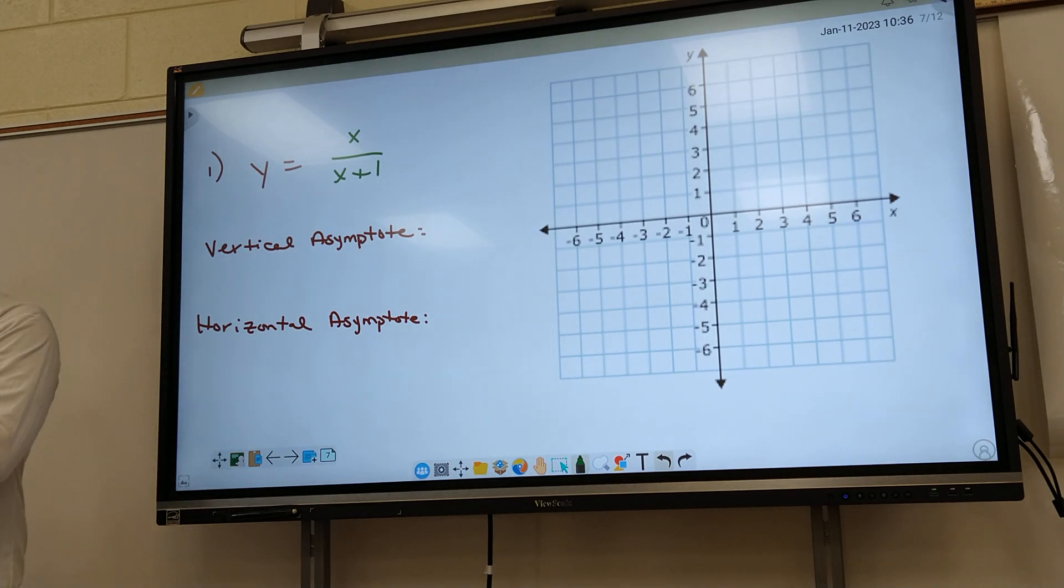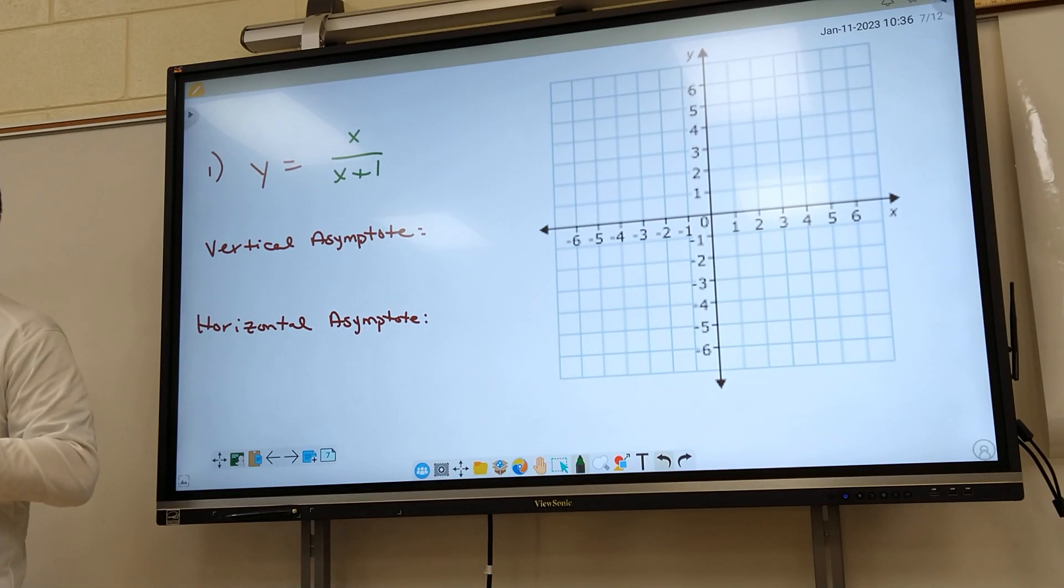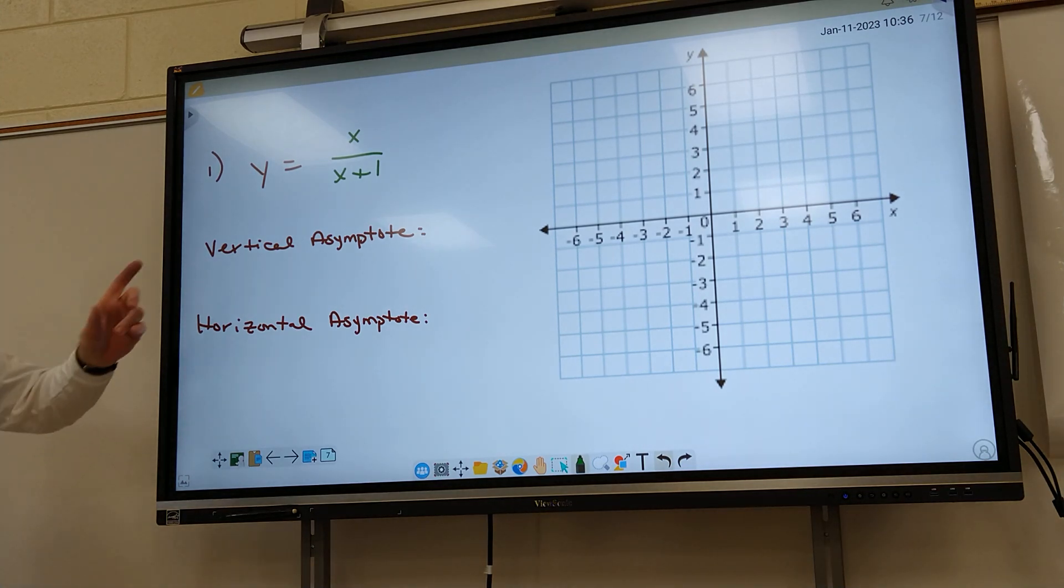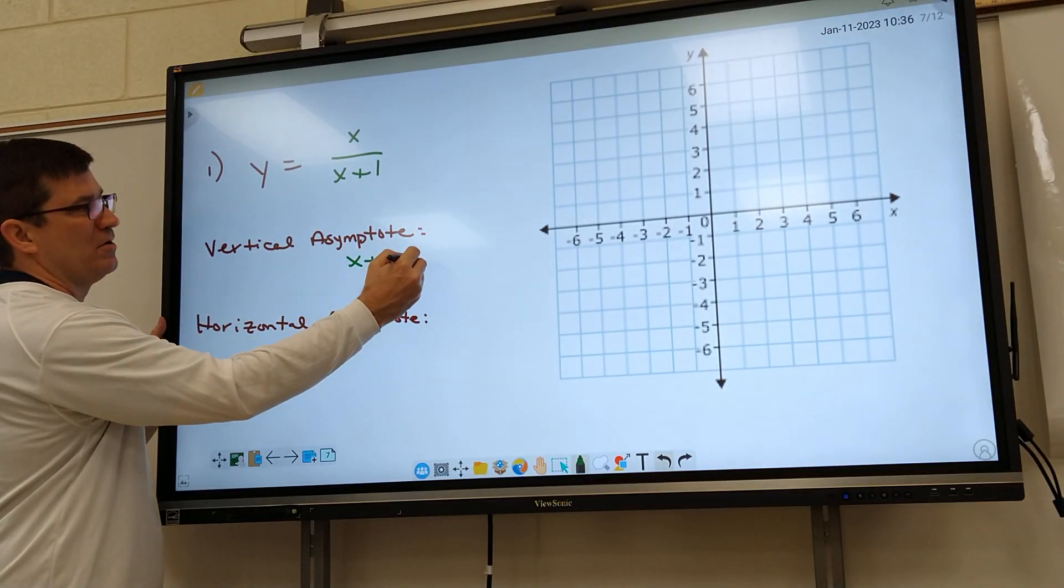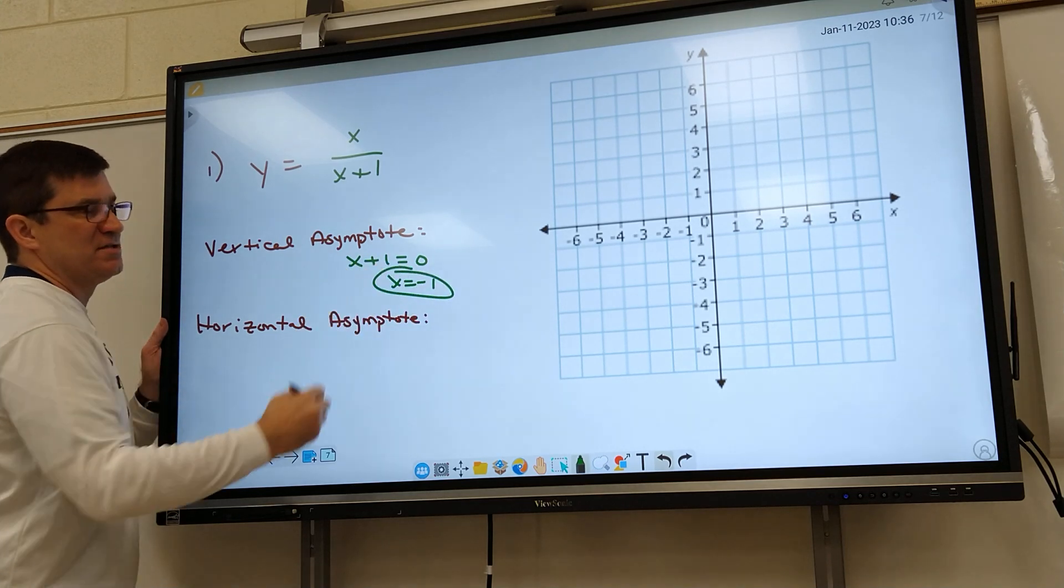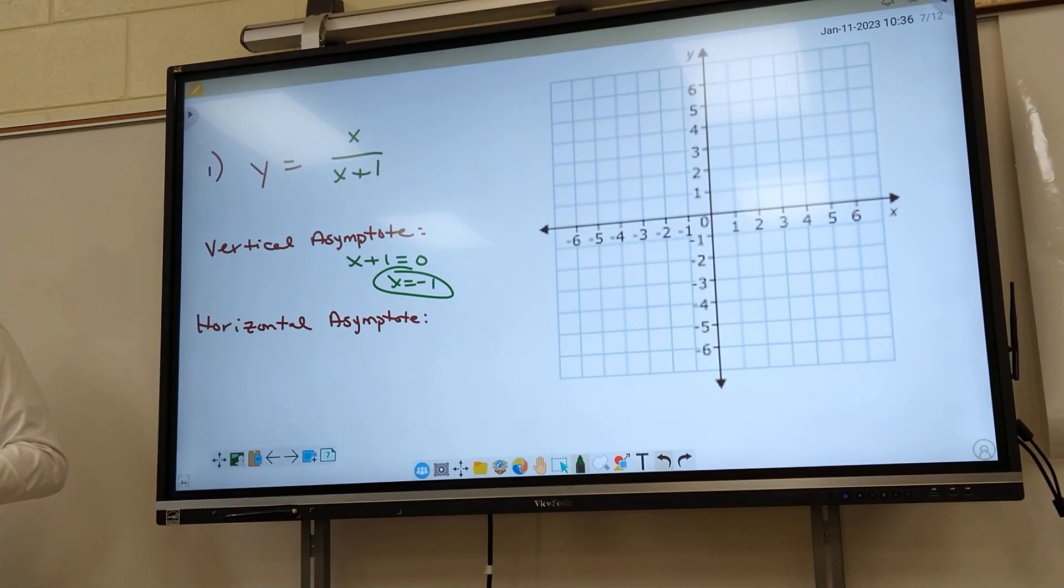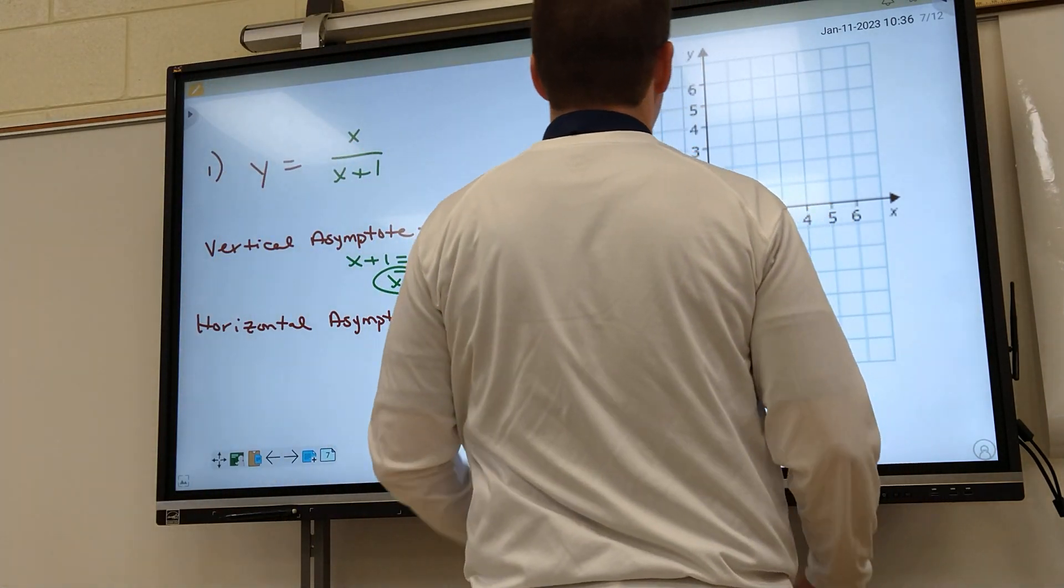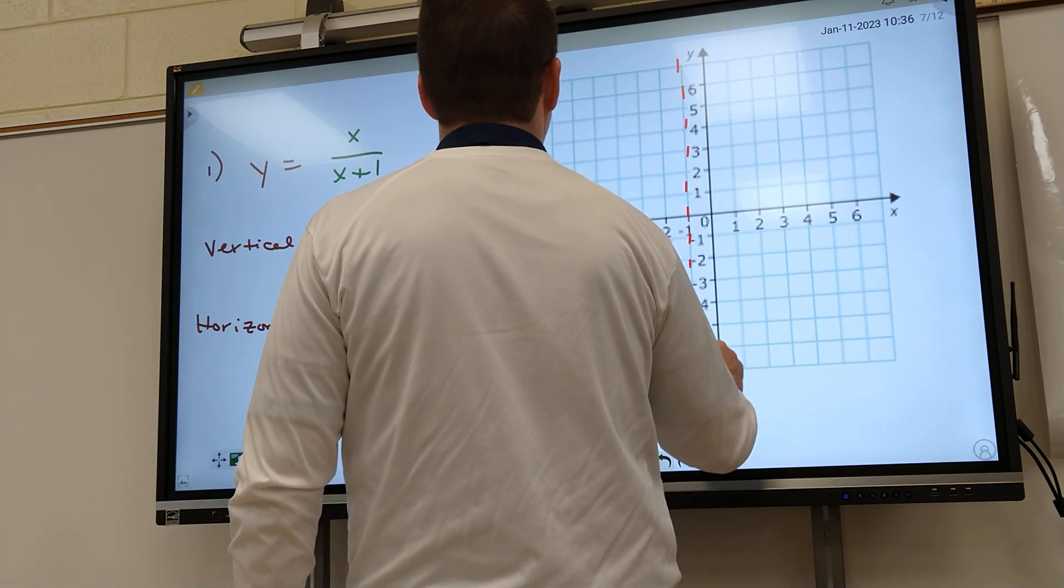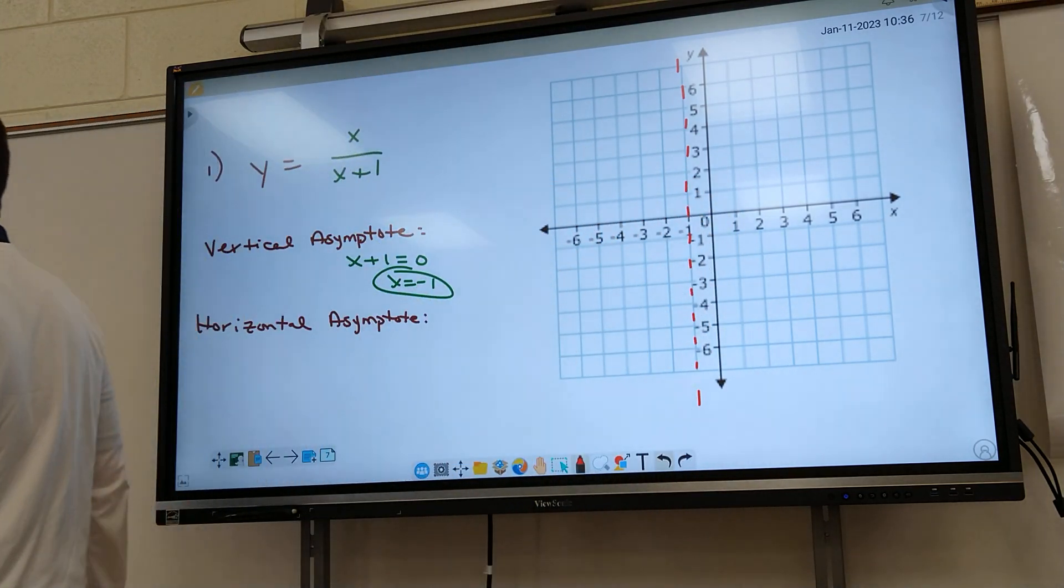Which way is vertical? Vertical is up and down, right? Horizontal is this way. So how do we find the VA, the vertical line? It's easy. You've been doing this. Just take the bottom, set it equal to zero, move it over. That gives me negative one. Does everyone see how I got negative one? So watch what I'm going to do with that. I'm going to go over here on my graph. At negative one, I put a vertical line up and down.